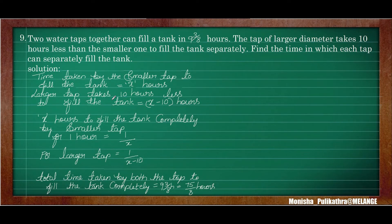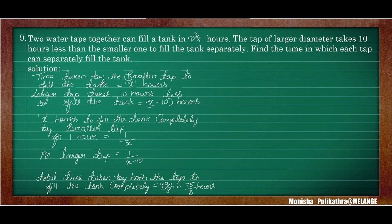Moving on to the 9th question. Two water taps together can fill a tank in 9 and 3 by 8 hours, which is 75 by 8 hours. The tap of larger diameter takes 10 hours less than the smaller one. Let time taken by the smaller tap to fill the tank completely be x hours. Then the larger tap takes x minus 10 hours.